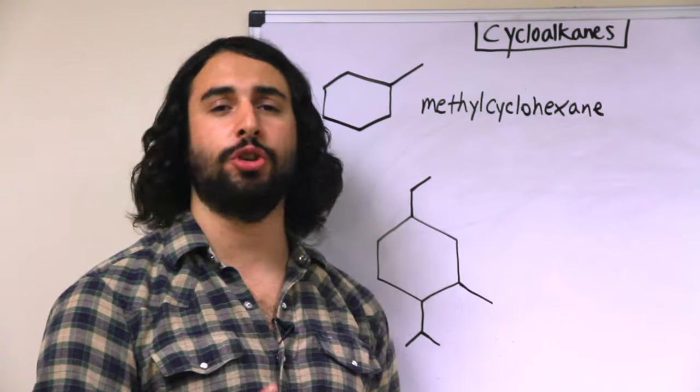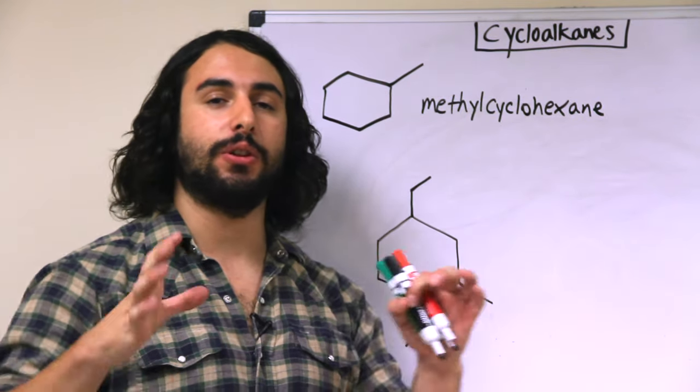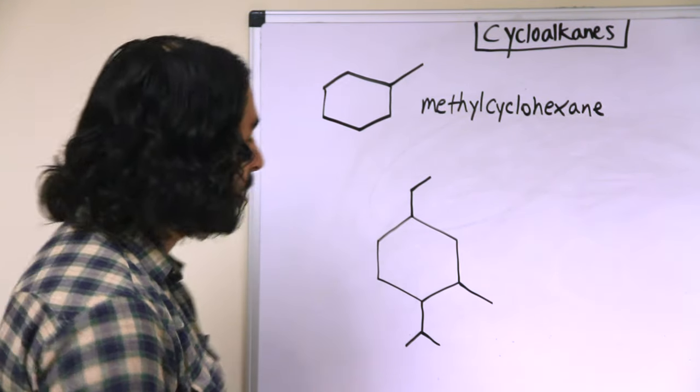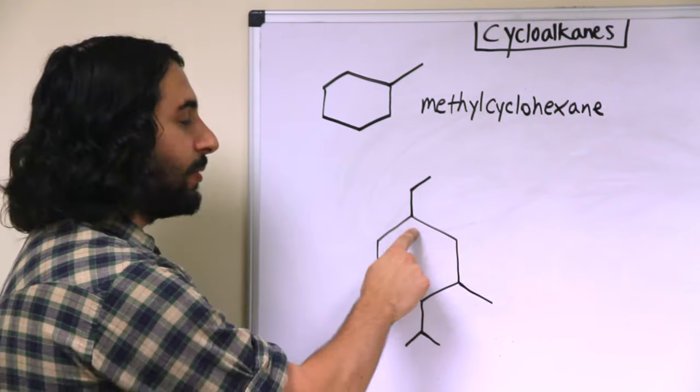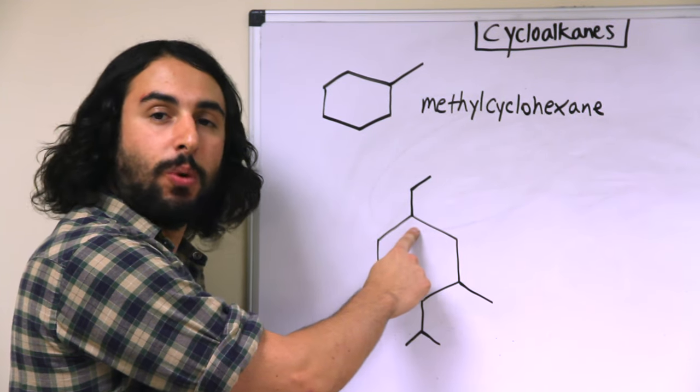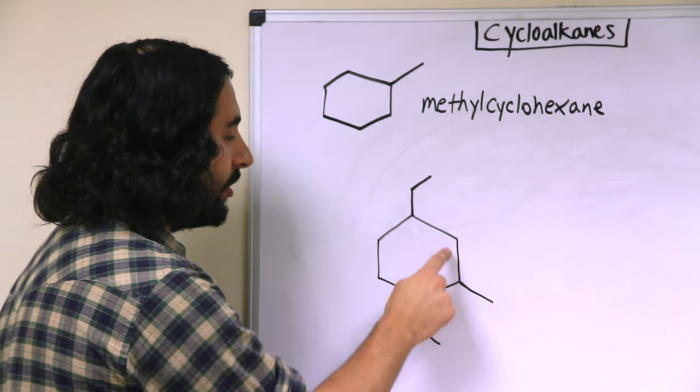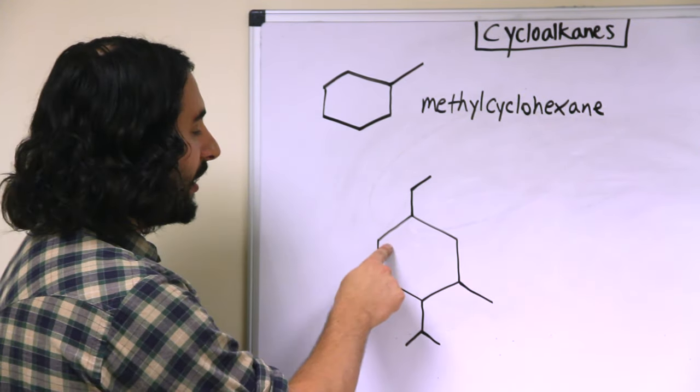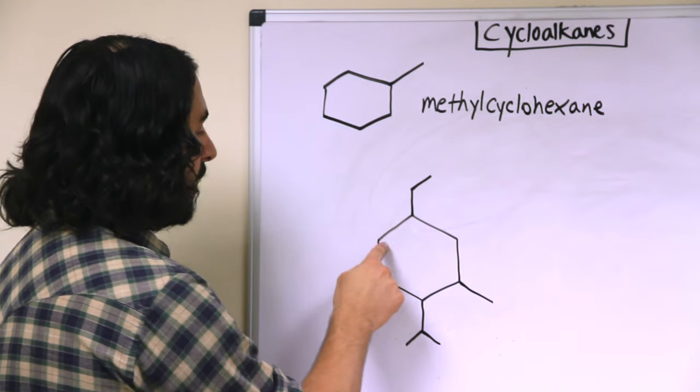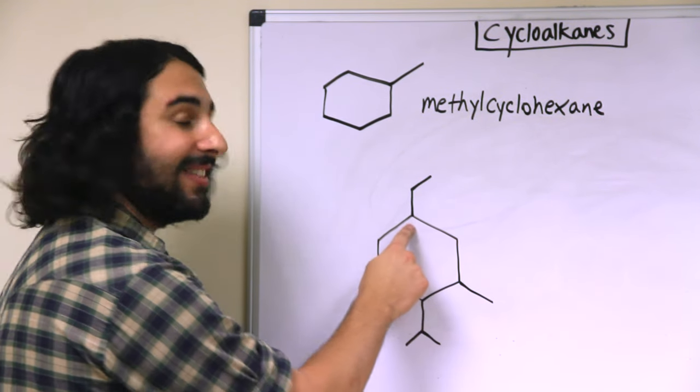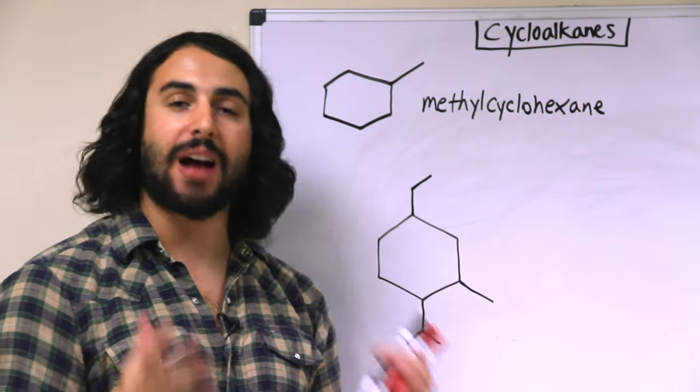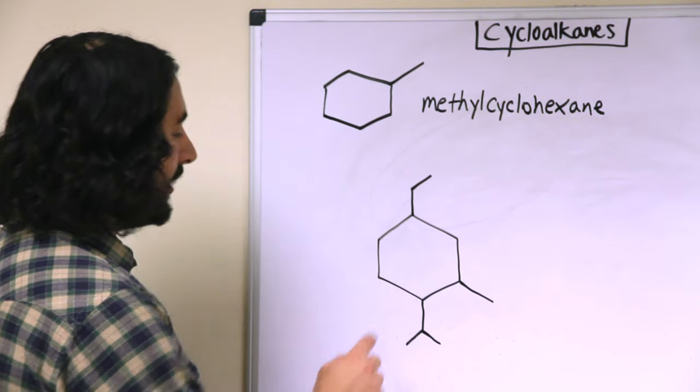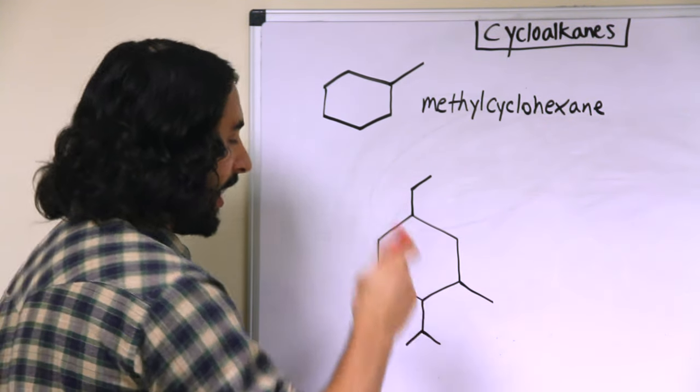However, we will choose the numbering system that gives the lowest set of locants possible for the substituents that are present. Let me show you what I mean. If we began here with carbon one and then went clockwise, this would be one, two, three and four, so we would have substituents on carbons one, three and four. Let's say we started here and went counterclockwise, we would have a substituent on three, four and then six. So you can see how there are many possible sets of locants, but the one that offers the lowest set of locants is if we begin here and go counterclockwise.